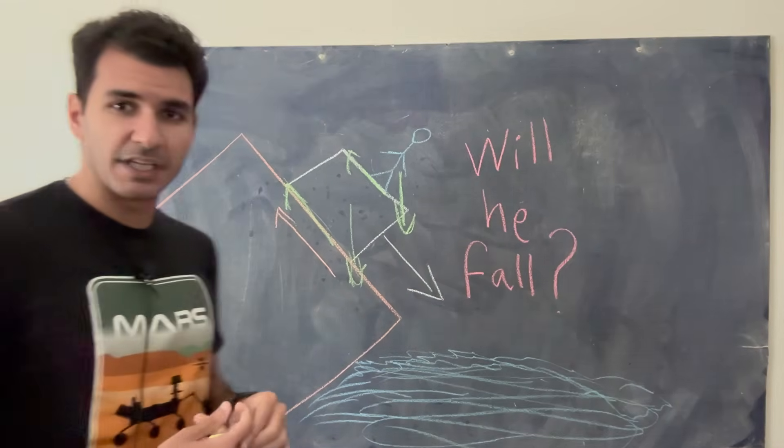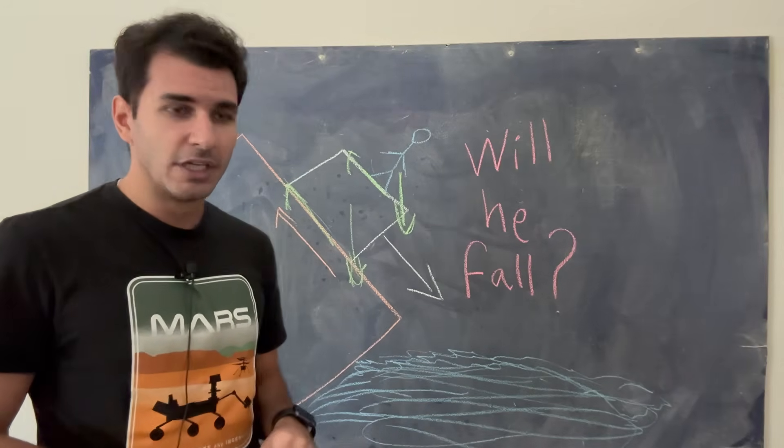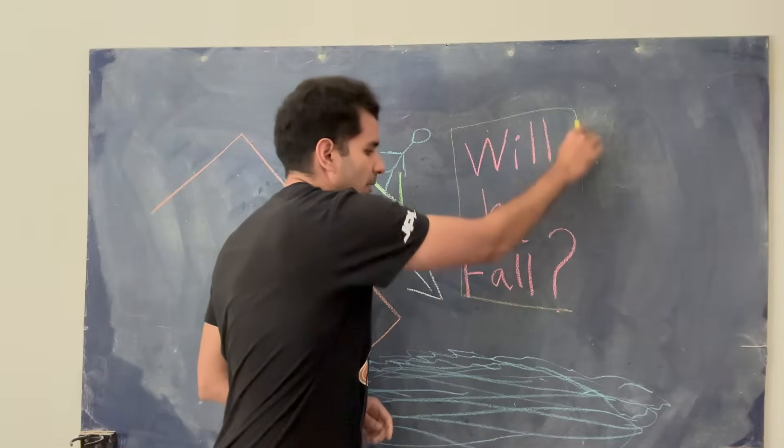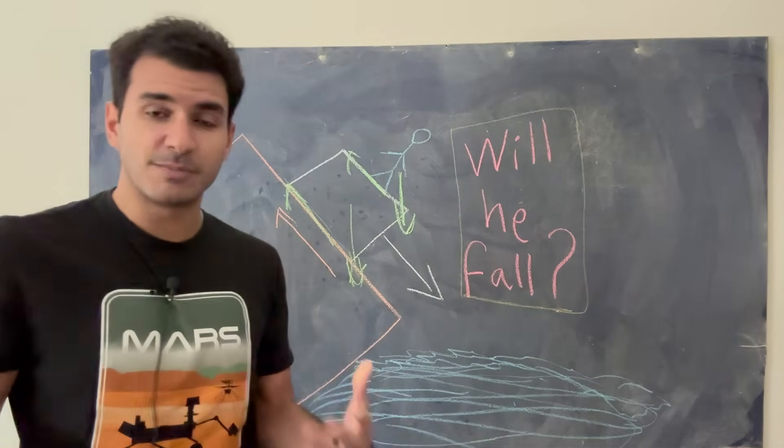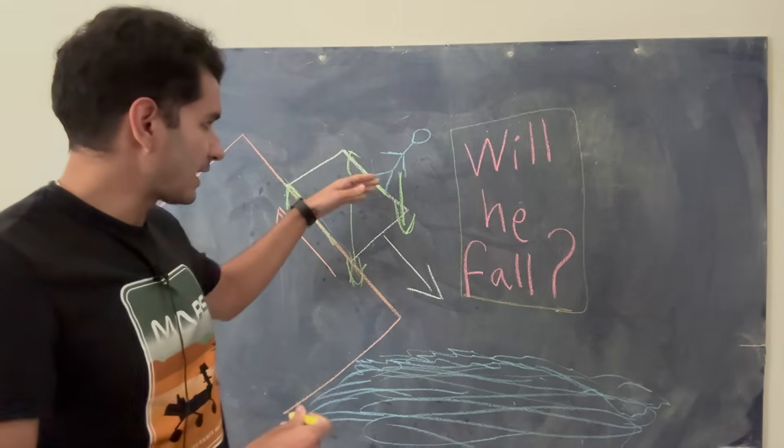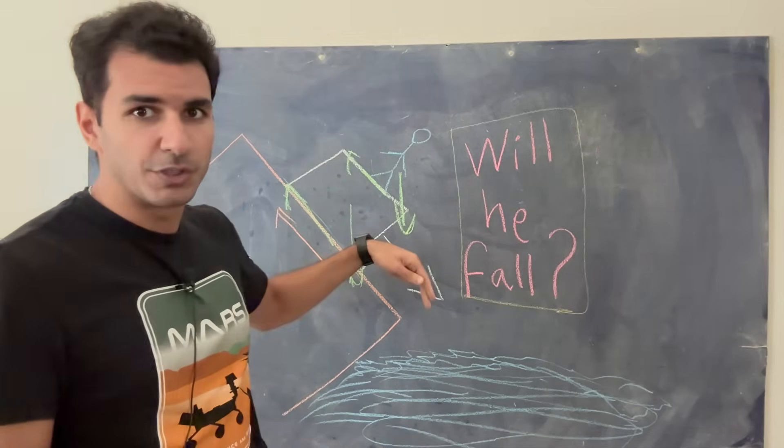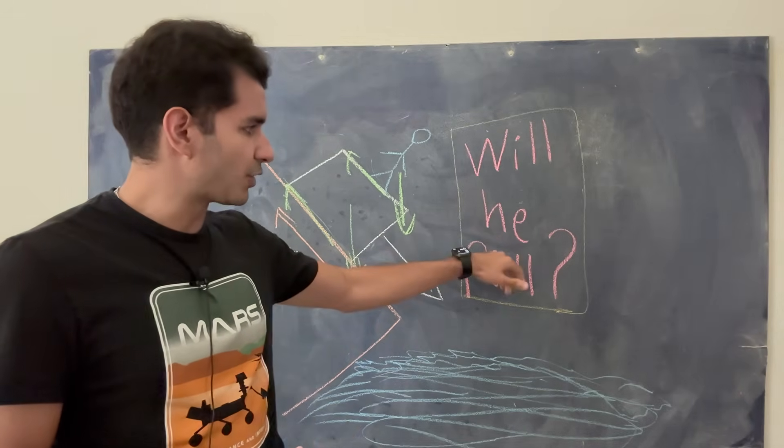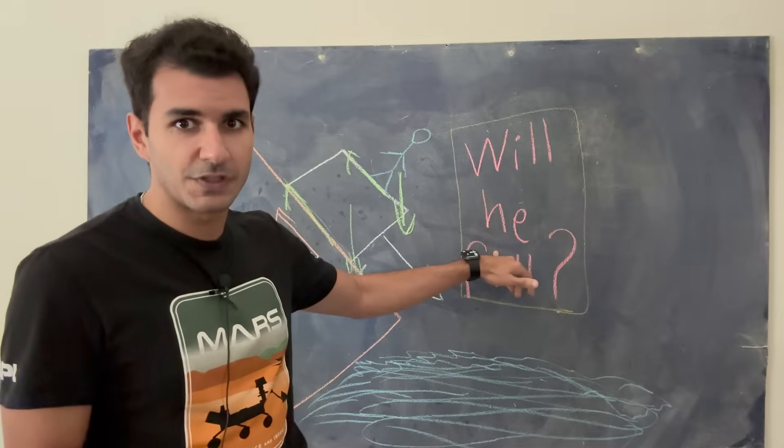So the very first thing that helps me figure out whether you're an engineer or not is to ask the question. Whenever you're coming to solve a problem, there has to be a problem. You first have to identify what the problem is. So in this case, the problem is we're trying to find out, is this dude going to fall, or is he not going to fall? So then the problem becomes answering this question.